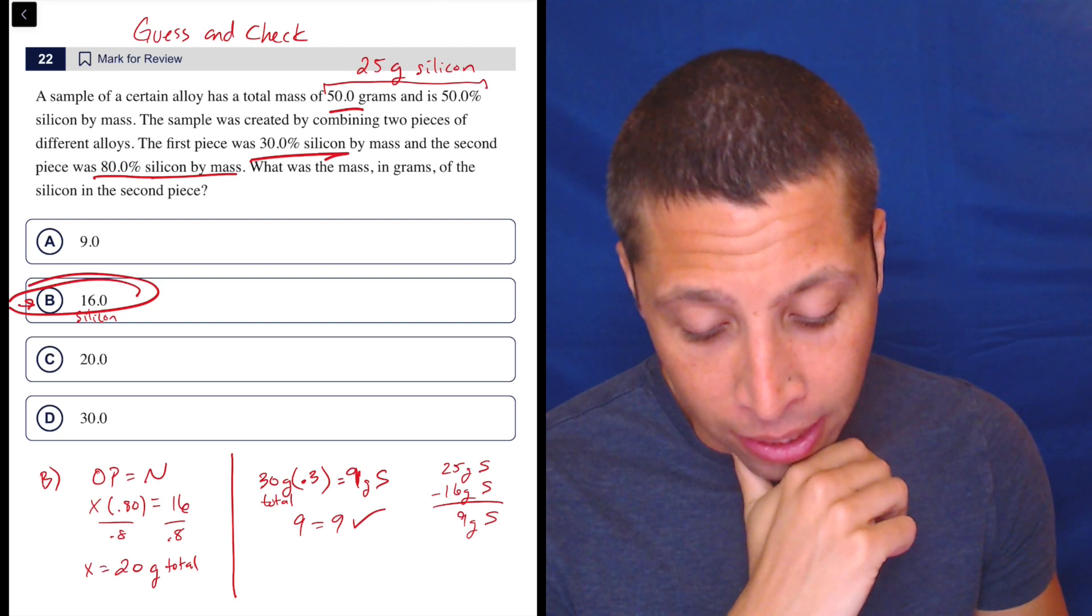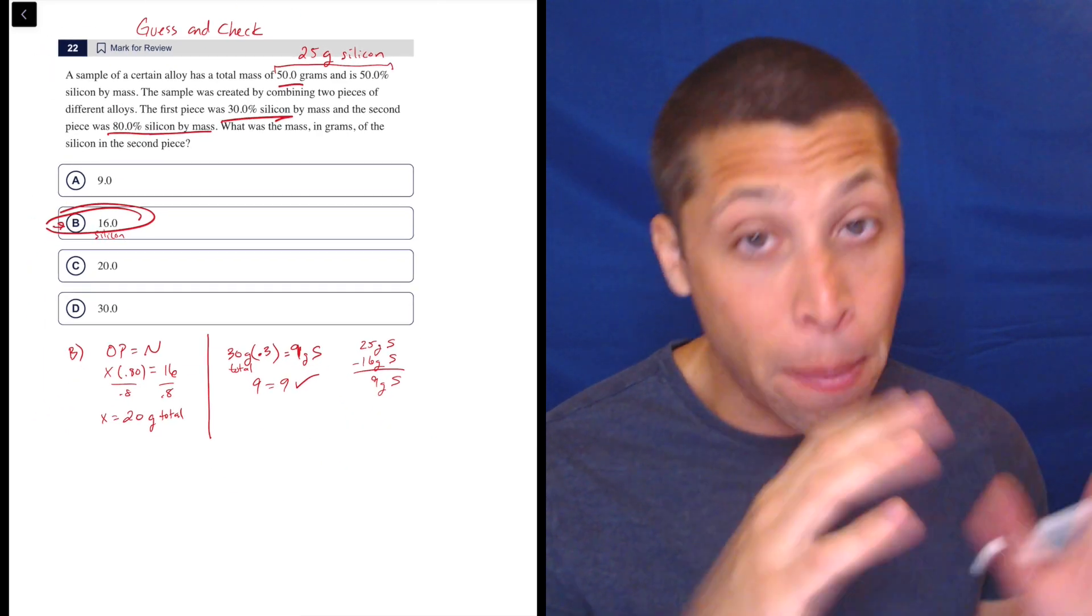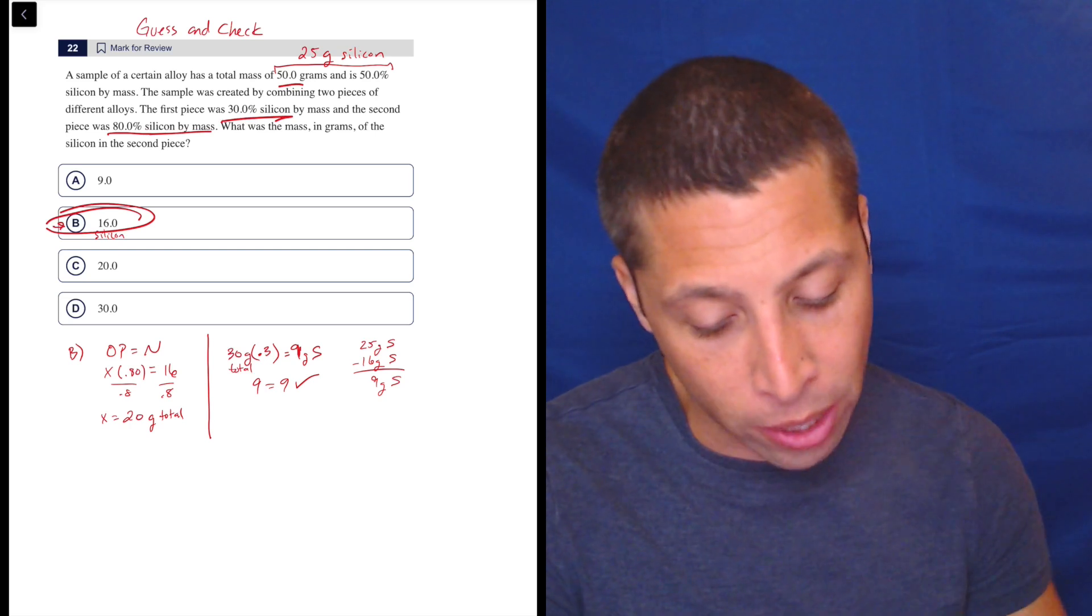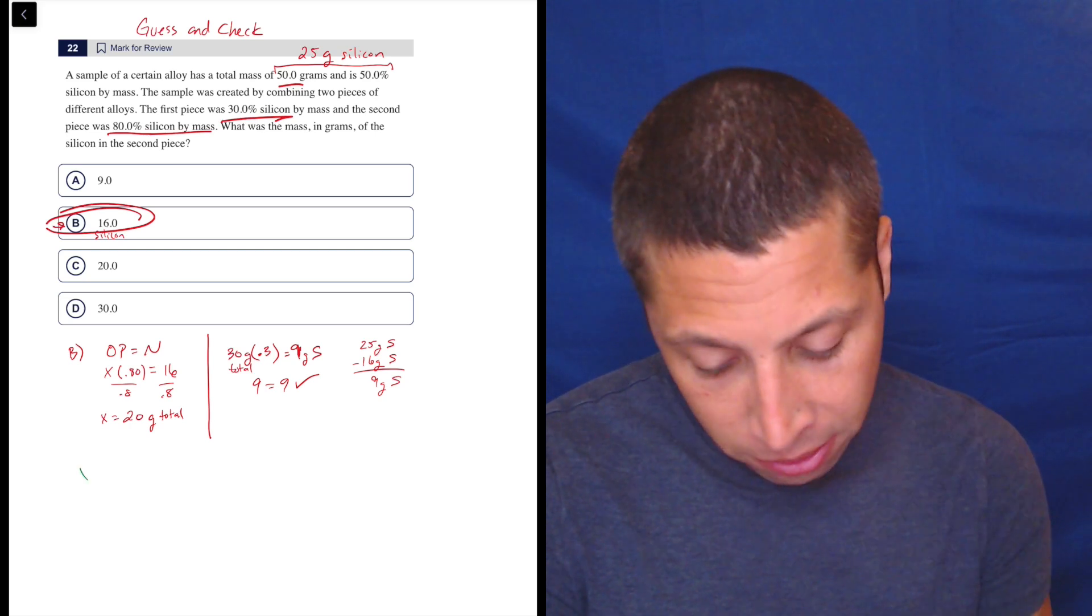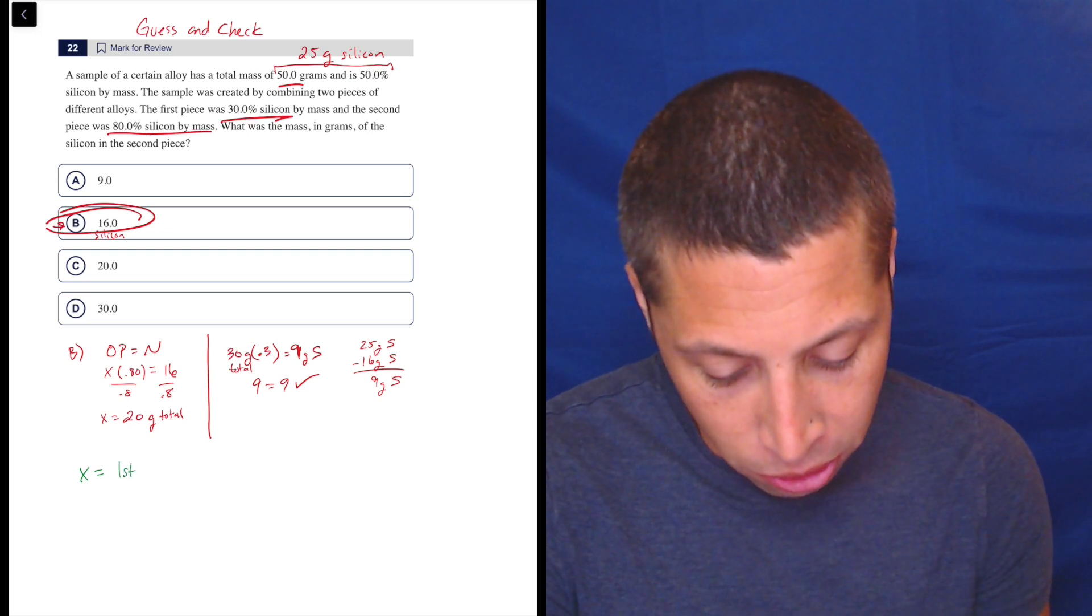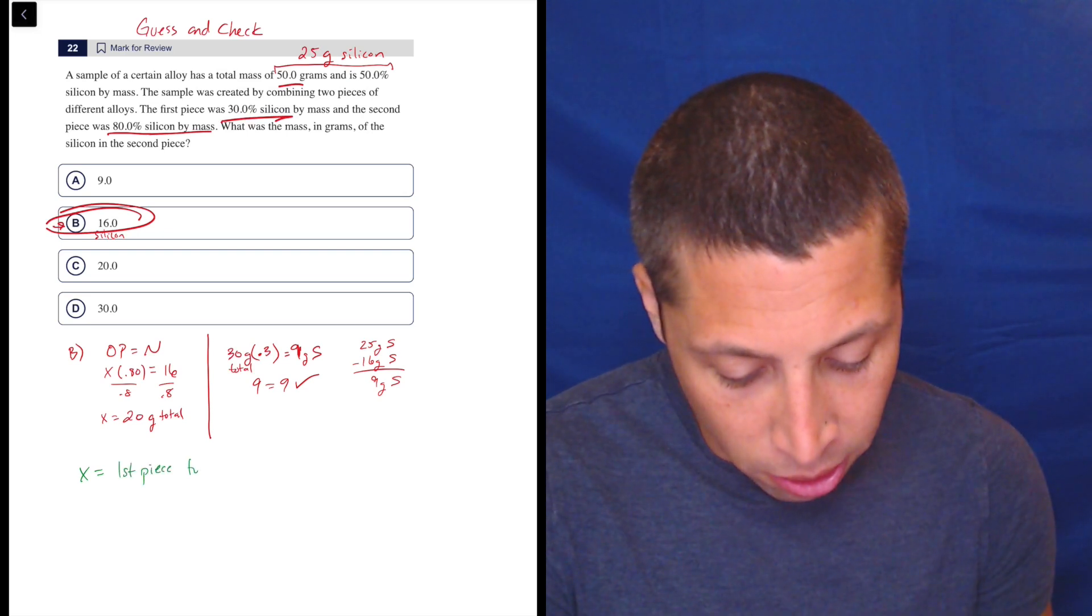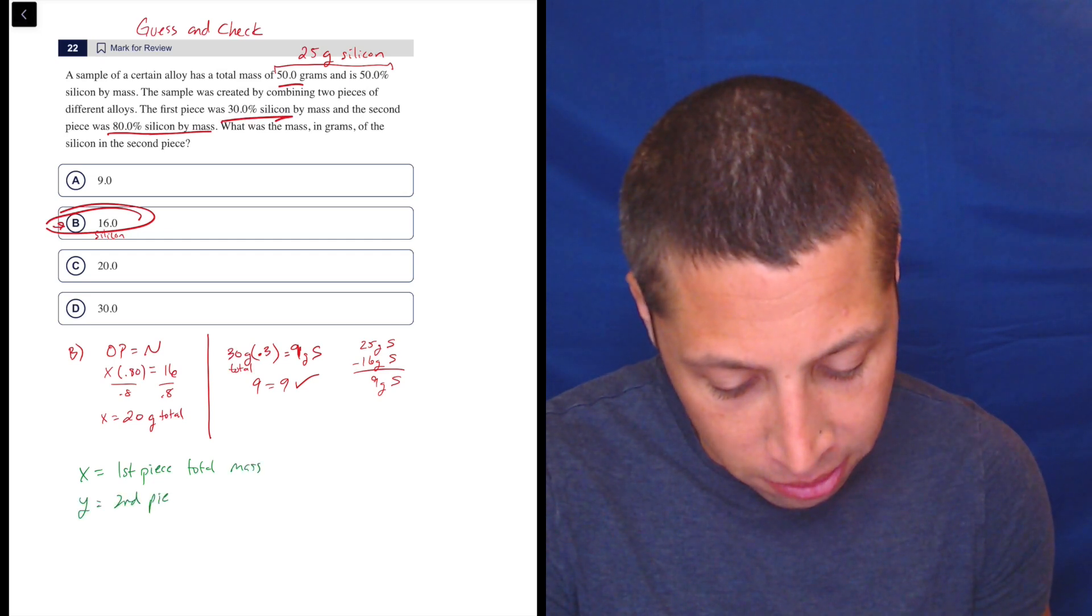What was the mass in grams? See, I'm already making myself nervous about this, but I bet the real College Board explanation has some equations. So what we would need to do is let's say the first piece is the X, is the first piece total mass. And Y is the second piece total mass.